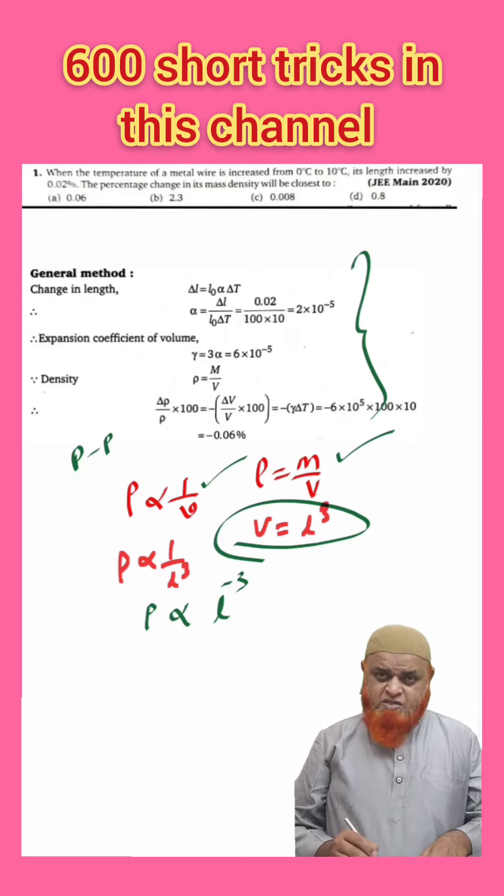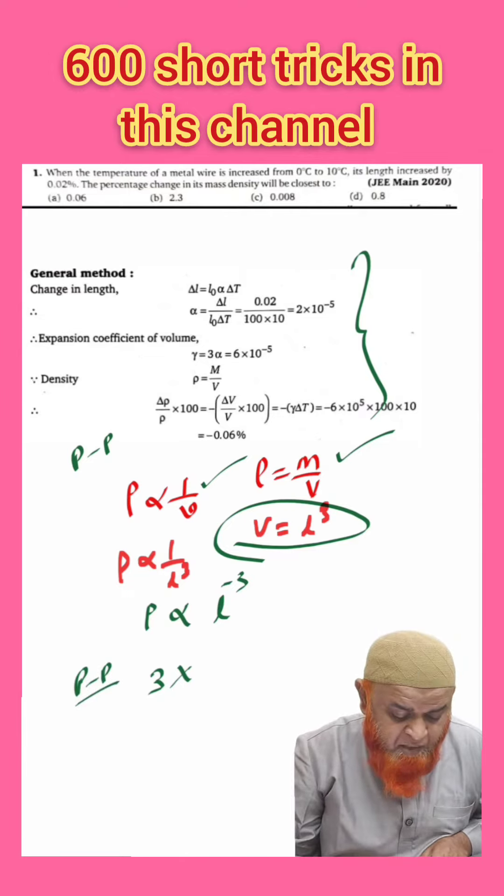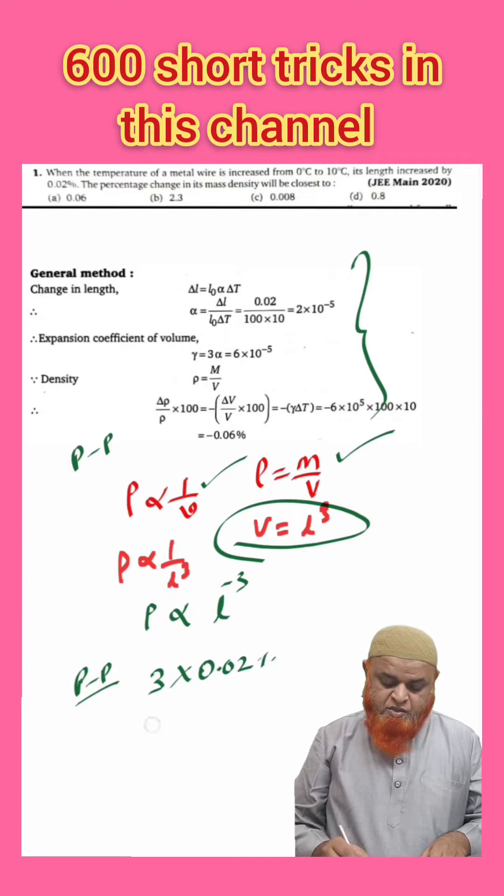You all know that density is inversely proportional to L³, means density is directly proportional to L^(-3). You just do one thing: power percentage technique means take power, multiply with percentage. PP method.